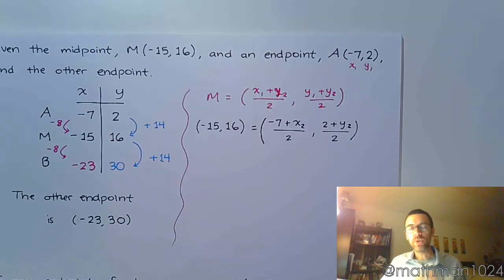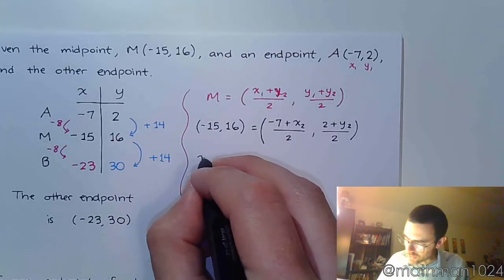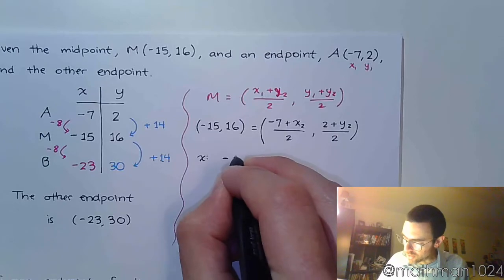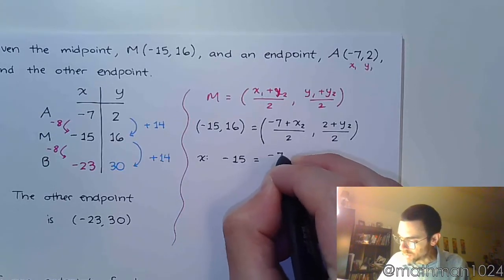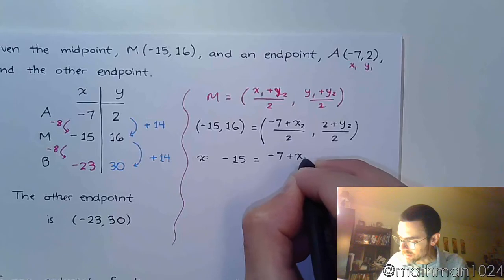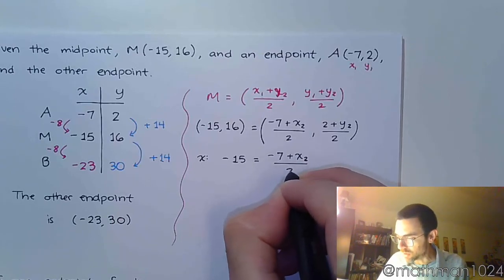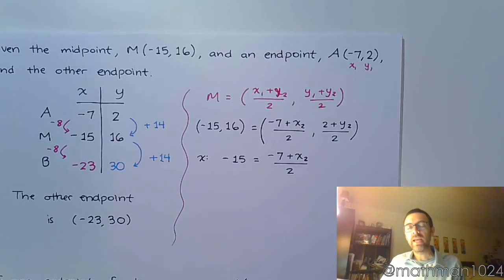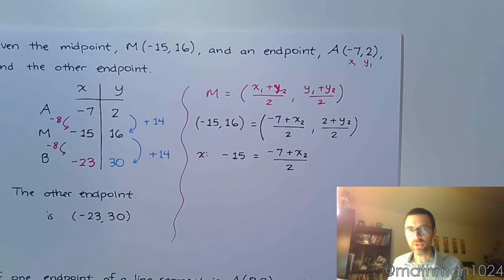And what we have here is that we can now equate your x coordinates to each other and the y coordinates to each other. So for the x, you're going to say that negative 15 equals negative 7 plus x2 over 2, and you can solve that. And you're going to do something very similar for the y. But first, let's solve this.